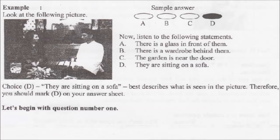Example. Look at the following picture. Now listen to the following statements. A. There is a glass in front of them. B. There is a wardrobe behind them. C. The garden is near the door. D. They are sitting on a sofa. Choice D — they are sitting on a sofa — best describes what is seen in the picture. Therefore, you should mark D on your answer sheet. Let's begin with question number 1.